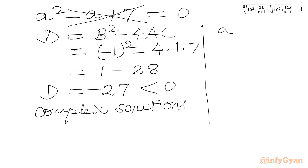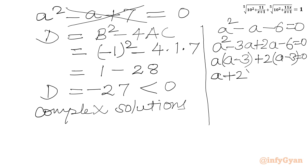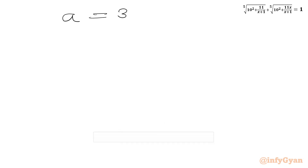Now the second equation: a² - a - 6 = 0. Using factorization, we split -a as -3a + 2a: a(a - 3) + 2(a - 3) = 0, giving (a + 2)(a - 3) = 0. So either a = 3 or a = -2.